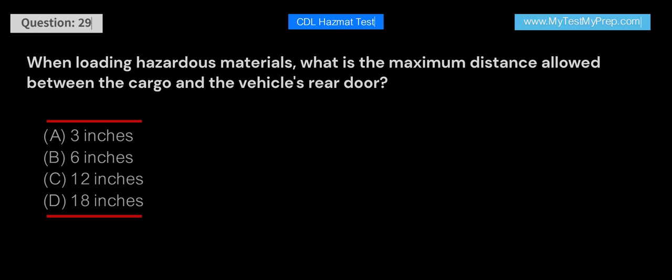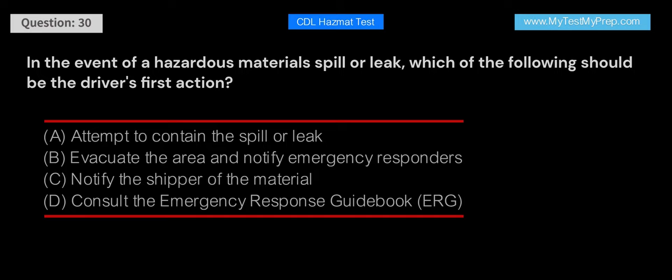In the event of a hazardous materials spill or leak, which of the following should be the driver's first action? A. Attempt to contain the spill or leak. B. Evacuate the area and notify emergency responders. C. Notify the shipper of the material. Answer: B. In the event of a hazardous materials spill or leak, the driver's first action should be to evacuate the area and notify emergency responders. This helps to ensure the safety of the driver and the public, and allows trained professionals to handle the incident appropriately.